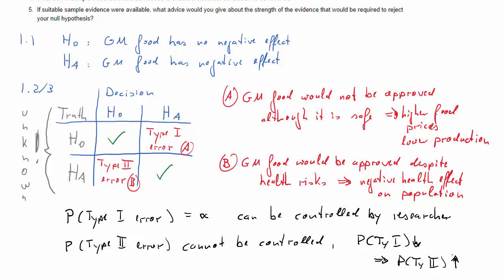For the time being, let's stick to using H0 as GM food has no negative impact. But in other situations, you may switch your hypothesis around just to make sure that the type of error which is more crucial can be controlled, and therefore it has to be the Type I error.